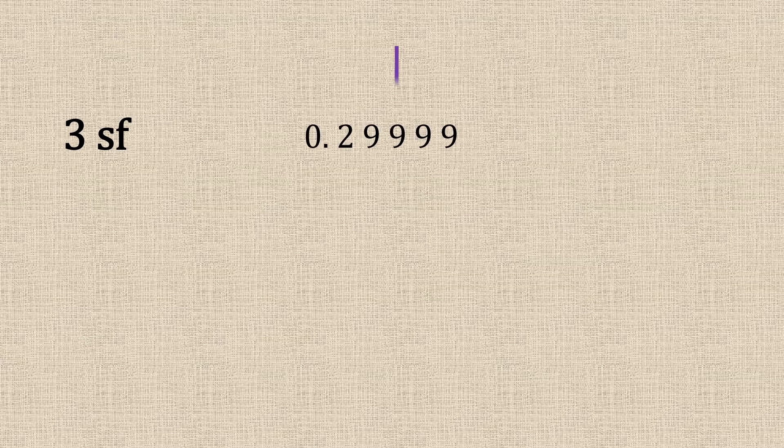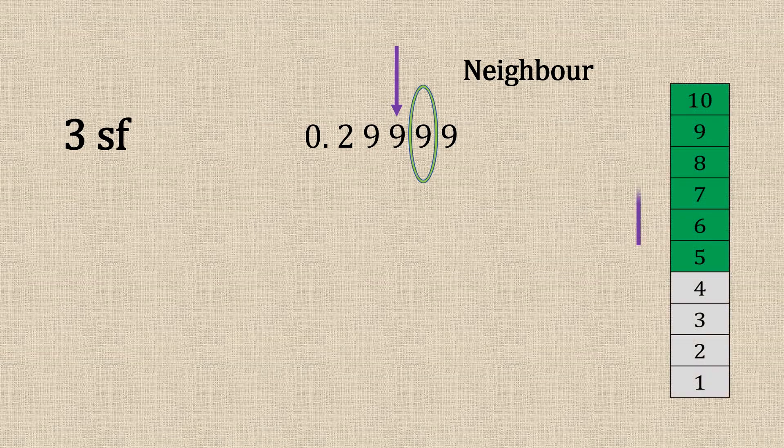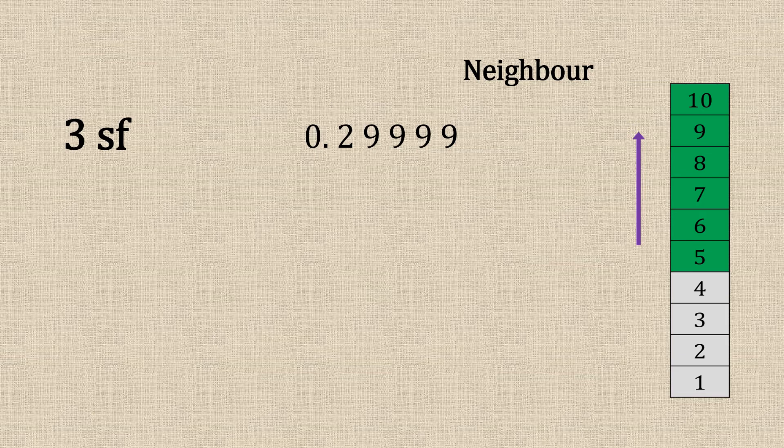Three significant figures. Number nine and the neighbour. It's a number nine. So we're going to high five. We're going to add one and carry them over each number. So our answer will be 0.300.